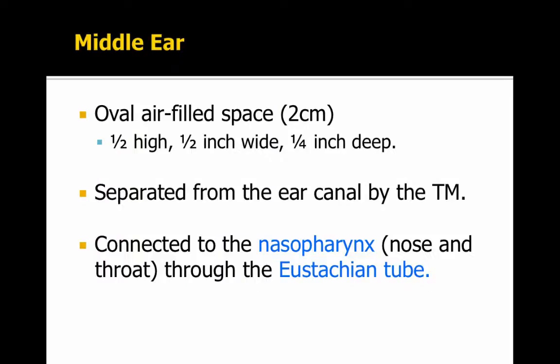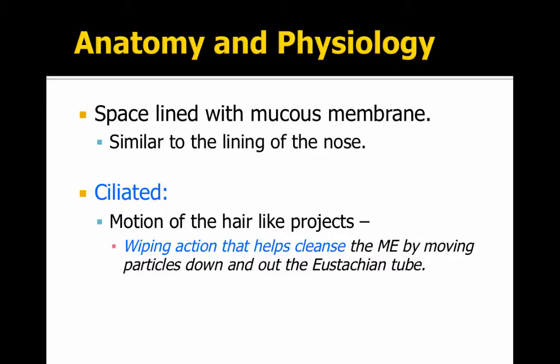The middle ear is an oval airfield space about 2 cm — half high, half wide, half deep — separated from the ear canal by the tympanic membrane, and connected to the nasopharynx, the nose, and the throat by the eustachian tube. That's why when you get sick you see an ear, nose, and throat doctor, because the eustachian tube connects the middle ear to the nose and the throat.